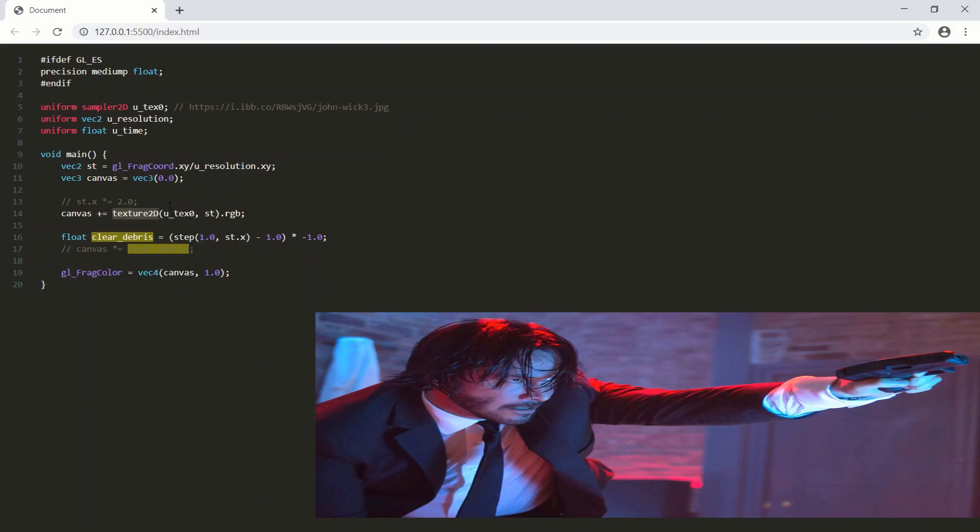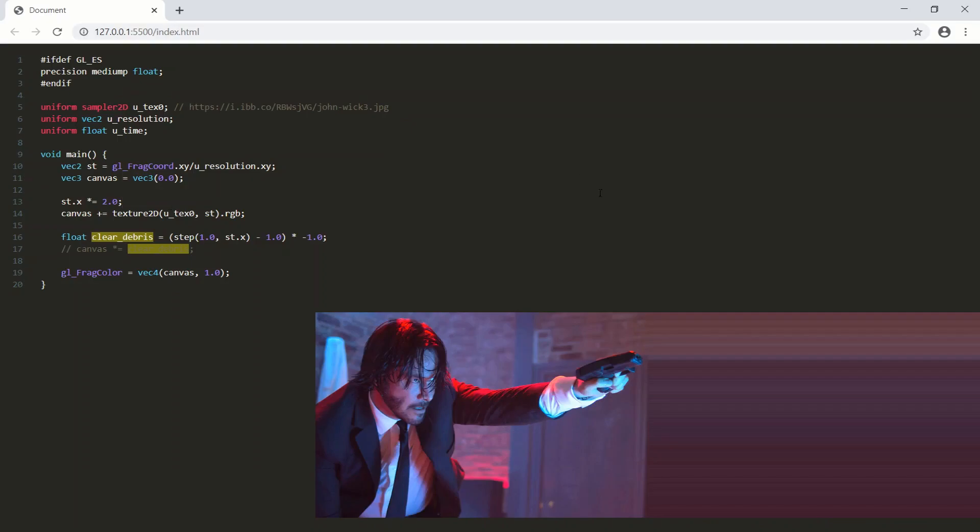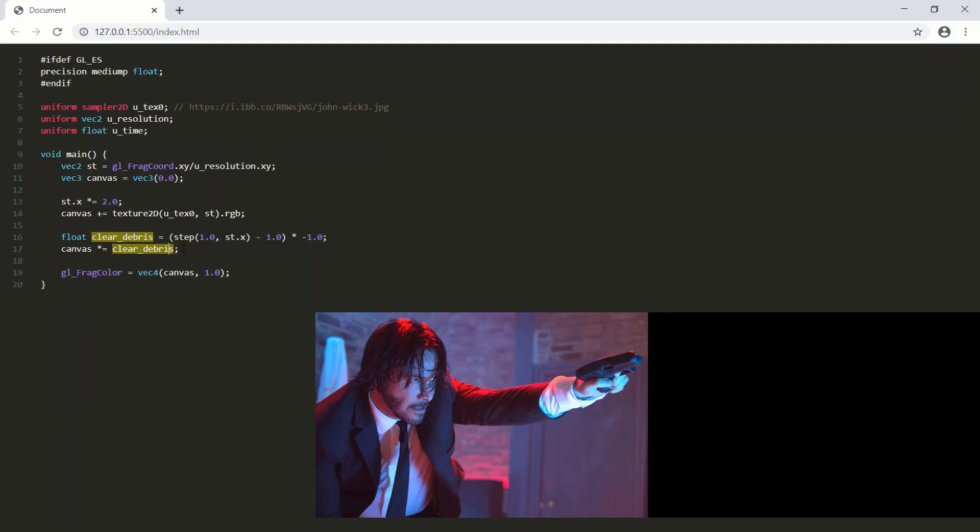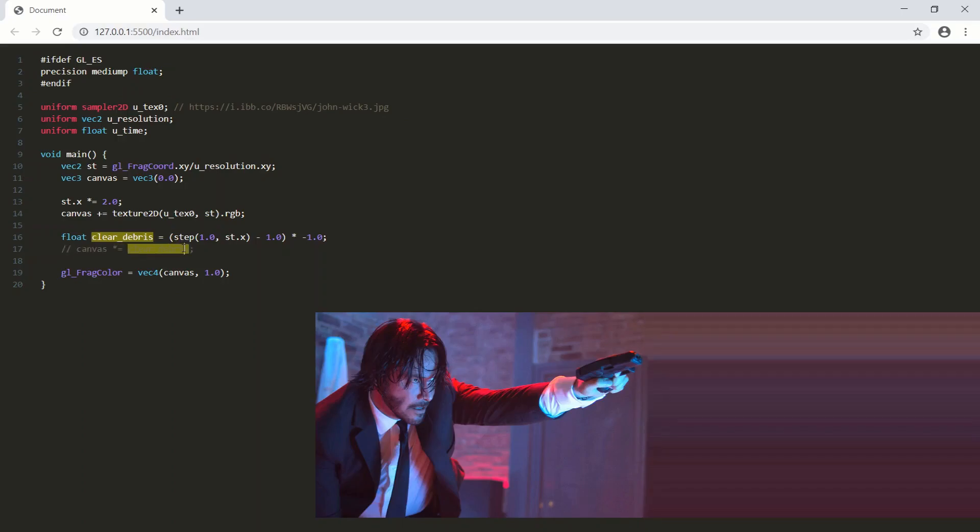So before we begin actually constructing the mirror dimension, let's do this. Let's speed up the x values by two, so we get that. And let's clear off this debris or this blending of colors on the right. So why did we speed up the values by two? And why is there even that stuff on the right?